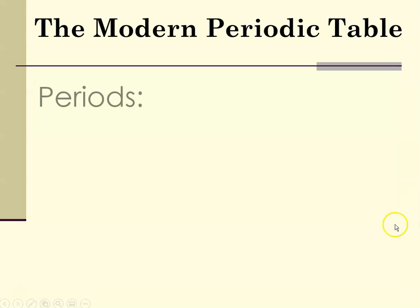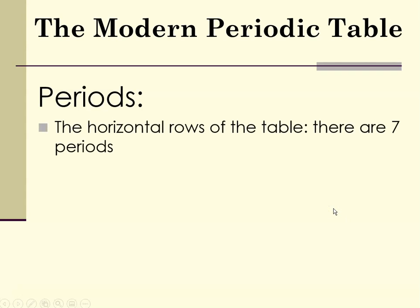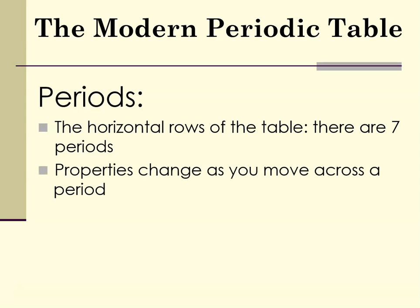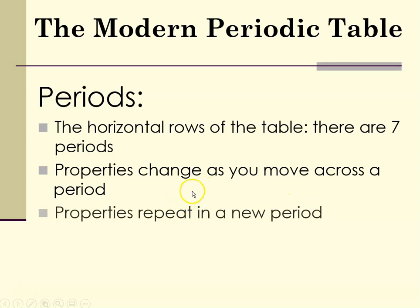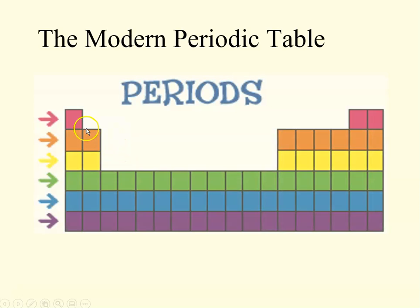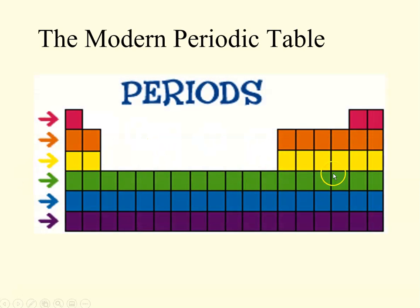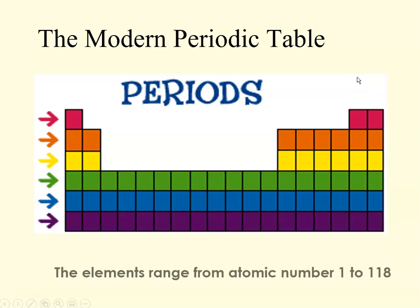Hydrogen is kind of a weirdo. According to the modern Periodic Table, the arrangement is periods — the horizontal rows — and there are seven. The properties change as you move from left to right across a period, and every time you start a new row, the properties begin to repeat again. Elements range roughly from atomic number 1 to 118 at this point.